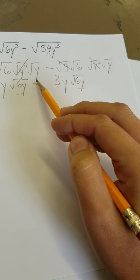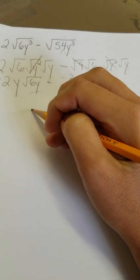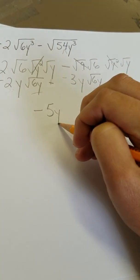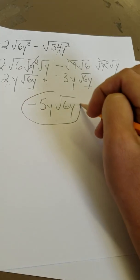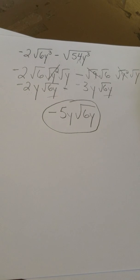Negative 2 minus 3. Same. Opposite, opposite, in case you forget. So negative 5Y radical 6Y. And hopefully you got that right.